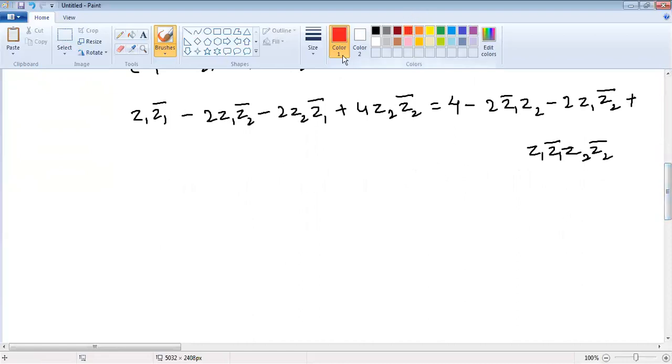Now if you look carefully, left side and right side, two values are going to be cancelled. Otherwise, modulus Z1 squared plus 4 into modulus Z2 squared equals 4 plus modulus Z1 squared into modulus Z2 squared.